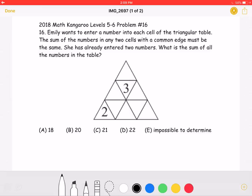A. 18, B. 20, C. 21, D. 22, or E. Impossible to determine.